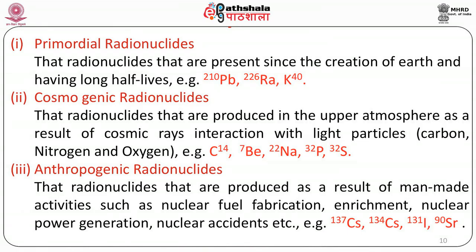These are all radioactive materials. The third category is called anthropogenic radionuclides — those produced as a result of man-made activities such as nuclear fuel fabrication, enrichment, nuclear power generation, and nuclear accidents. Whenever such incidents take place, we get radioactive materials like caesium-137, caesium-134, iodine and strontium. So we have defined radioactivity in three forms: primordial, cosmogenic and anthropogenic.